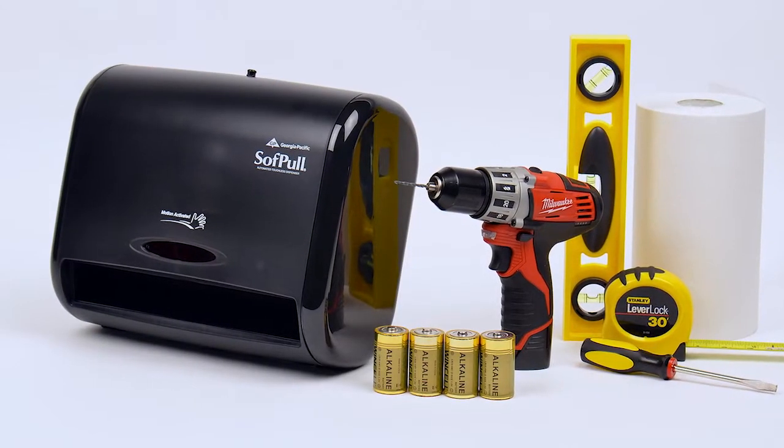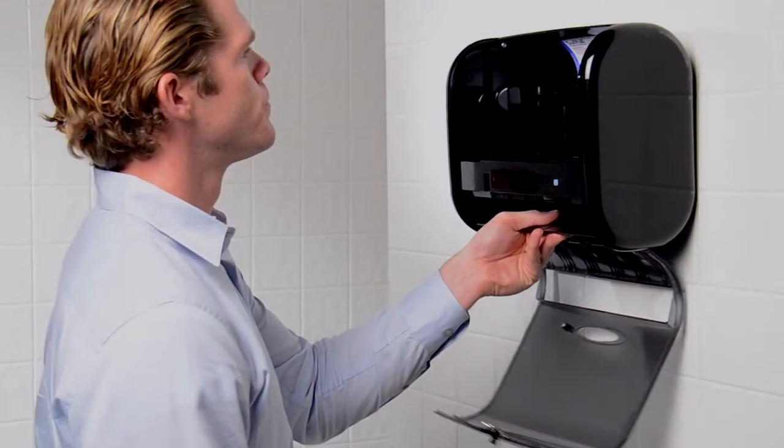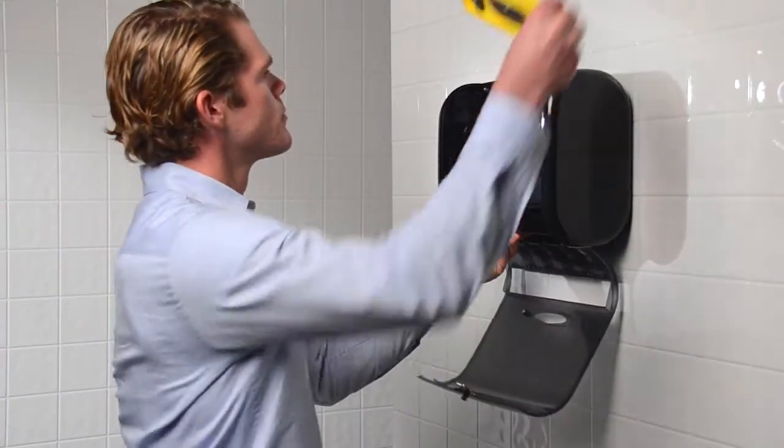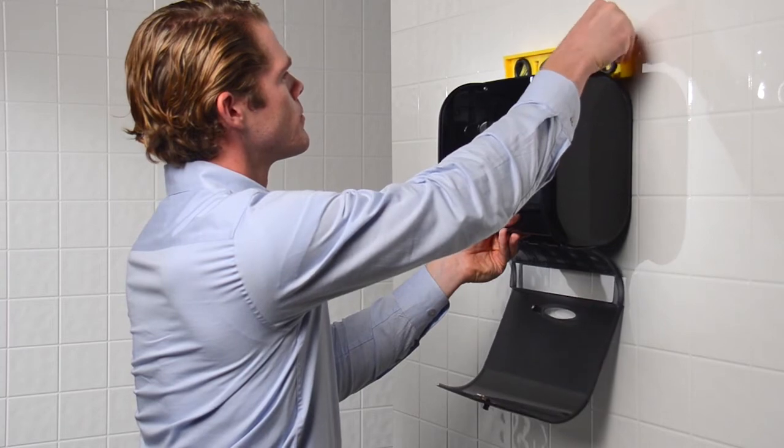To begin installation, you will want to find an ideal location for the dispenser. The SoftPull Small Automated Dispenser works best when there is adequate room to access the lock and open the cover.